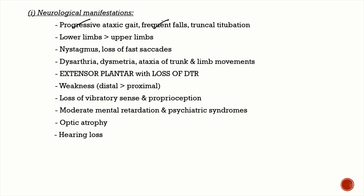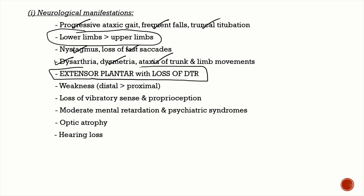Neurological manifestations include progressive ataxic gait, frequent falls, truncal titubation, and lower limb involvement greater than upper limbs due to spinocerebellar tract involvement. Also present are nystagmus, loss of fast saccades, dysarthria, dysmetria, and ataxia of trunk and limb movements. Importantly, patients have an extensor plantar response due to pyramidal involvement, and loss of deep tendon reflexes due to peripheral neuropathy.